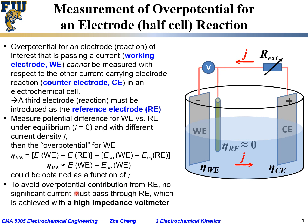To avoid overpotential contribution from the reference electrode, you must choose a reversible reference electrode with very little overpotential even if a small current flows. Additionally, a high-impedance voltmeter must be used to suppress any current flow between the working and reference electrodes. This is the method to measure overpotential at different current densities for the electrochemical half-cell reaction of interest occurring at the working electrode.